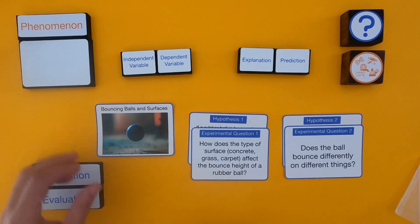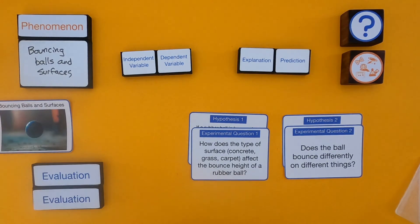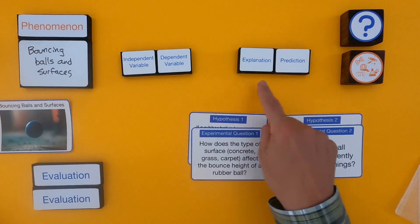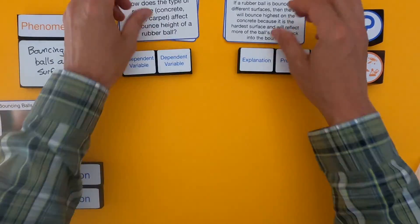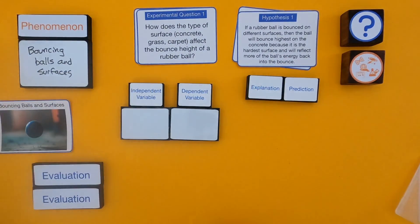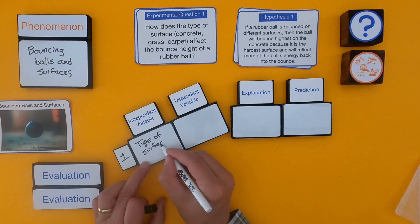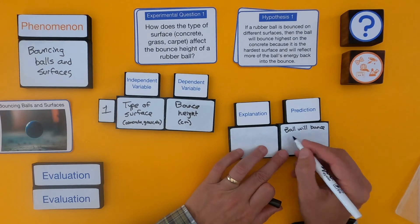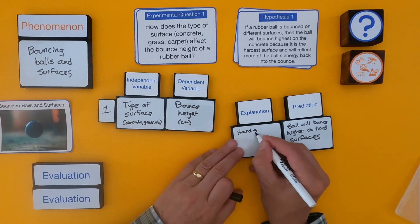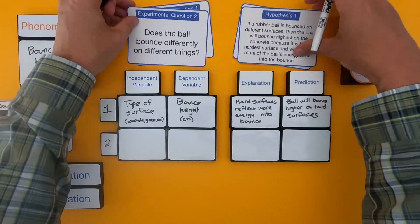The first thing I would want to do is identify the phenomenon. The next thing is to go through and look for the variables, explanation, and prediction in each of the questions. Then I'll come back and walk through that, and we'll do the evaluation.